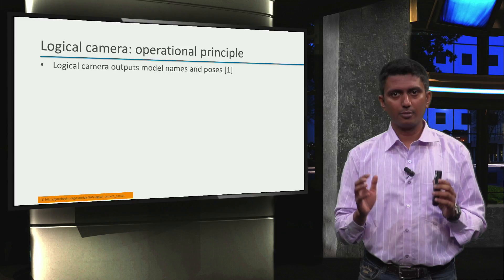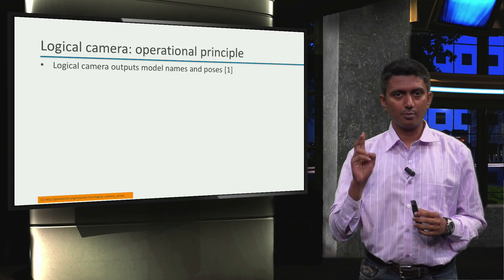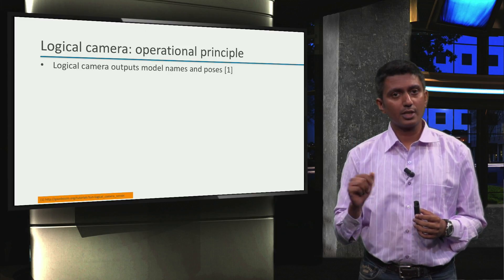A logical camera outputs model names and model poses. And how are these models created?